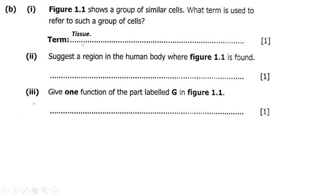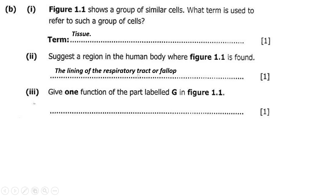Roman numeral two says suggest a region in the human body where figure 1.1 is found. We can say the lining of the respiratory tract or the fallopian tube. The respiratory tract includes the windpipe and the nose, while the fallopian tube is also known as the oviduct.